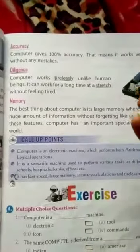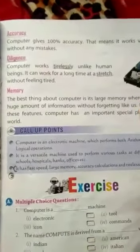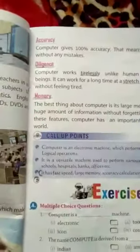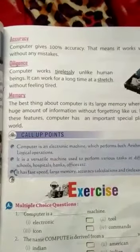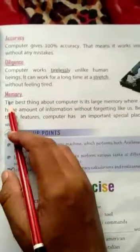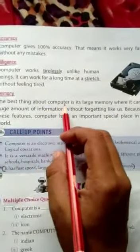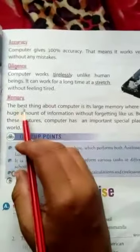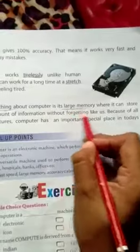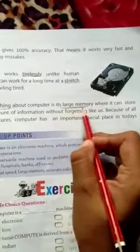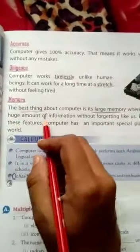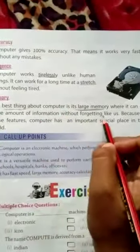The next feature is memory। Memory मतलब याद रखने की क्षमता — इसकी learning और याद करने की क्षमता बहुत तेज़ होती है। The best thing about a computer is its large memory। Computer की best quality यह है कि इसकी बड़ी memory है — बड़ी याद रखने की क्षमता है।